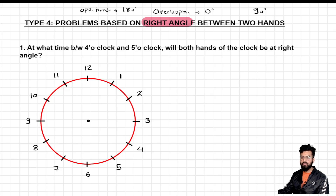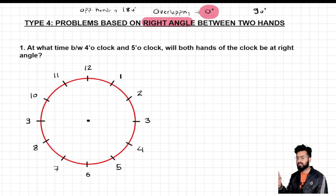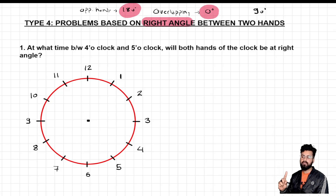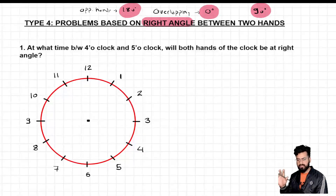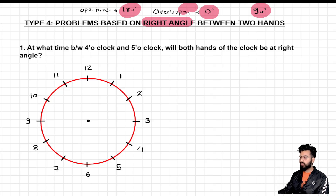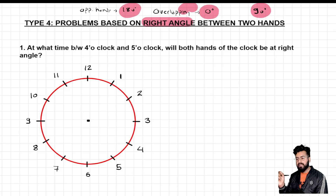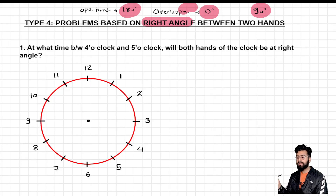When we talk about a 0-degree angle, that occurs just one time. Likewise, when we talk about opposite hands — 180 degrees — it will also be one time. But when we talk about a right angle, meaning 90 degrees, we tell students that this happens twice. There will be two times when the angle between the two hands is 90 degrees. Note there is an exception to all these conditions, which we will discuss in the next lecture. But generally, overlapping is once, opposite is once, and 90 degrees happens twice.